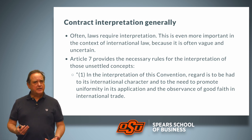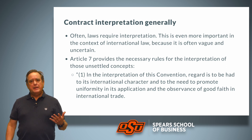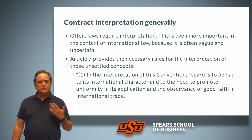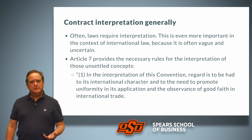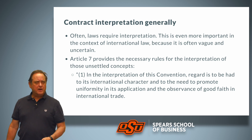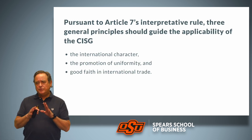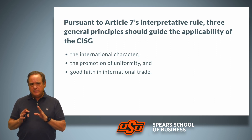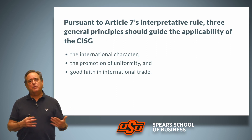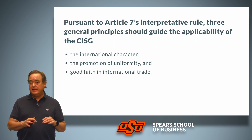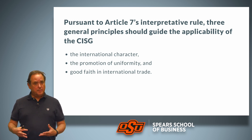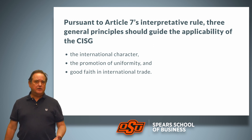Contracts will often require interpretation, and this is even more important in the context of international law because it's often vague and uncertain. Article 7 of the CISG gives us the rules for the interpretation of a contract. It has broad rules based on the preamble of the CISG: we must regard the international character of the transaction, the need to promote uniformity in the application of the CISG, and the observance of good faith in international trade. Those three principles guide the applicability of the CISG.